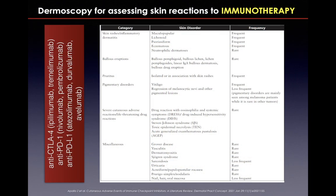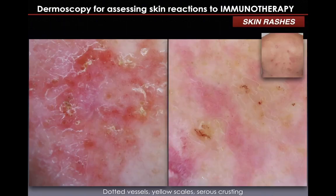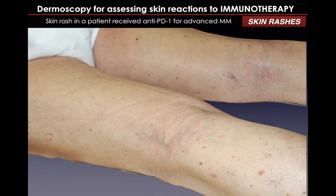In recent years, dermoscopy has been demonstrated to be important for the diagnosis and management of immune-related adverse events typical of immune checkpoint inhibitors. For example, a skin rash on the trunk of a patient who received antibodies targeting the programmed cell death protein 1 (PD-1) for advanced melanoma shows dotted vessels distributed in clusters, yellowish scales, and serocrests — specific dermoscopic features of eczema.